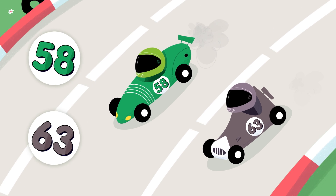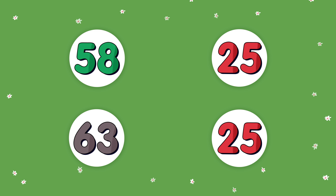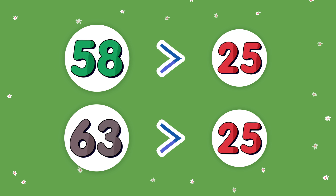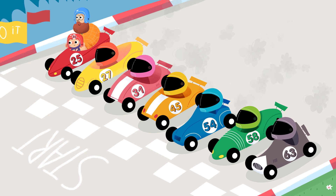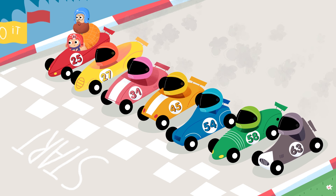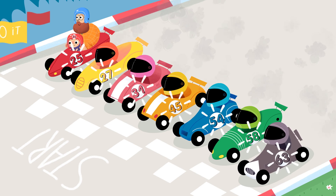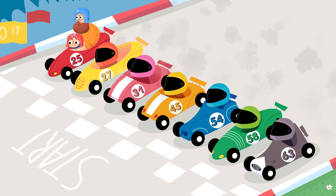There are two more cars. Are the numbers greater than or less than 25? It looks like they both have bigger numbers in the tens place, so they are both greater than 25. Remember, look left and compare the tens place first. On your mark, get set, go!